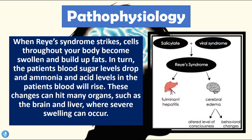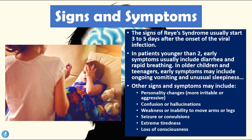When Reye's syndrome strikes, cells throughout the body become swollen and build up fats. The patient's blood sugar levels drop, and ammonia and acid levels in the blood rise. These changes can affect many organs, particularly the brain and liver, where severe swelling can occur. The salicylate use together with a viral infection leads to fulminant hepatitis — inflammation and swelling of the liver — as well as cerebral edema, which causes altered levels of consciousness and multiple behavioral changes.